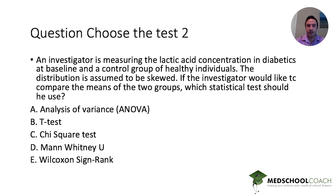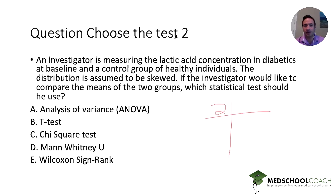New question: an investigator is measuring lactic acid concentration in diabetics at baseline and a control group of healthy individuals. The distribution is assumed to be skewed. The investigator would like to compare the means of the two groups. Which statistical test should be used? We have two groups, and we're looking at the mean lactic acid concentration — so this is quantitative data.